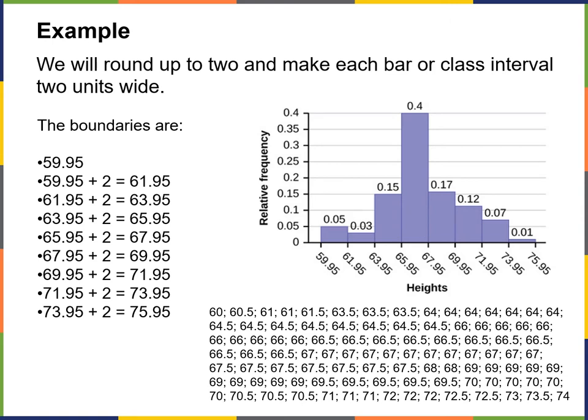Here are our boundaries. Our first boundary starts at 59.95. Our last boundary goes by two units — two inches — until we end at 75.95. Then you can see what the relative frequency is of the different heights of the people on this team.